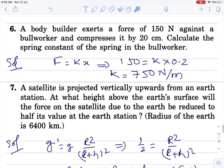Question number 6. Body builder exerts a force of 150 Newton against a bullworker and compresses it by 20 cm. Calculate the spring constant. So F equals kx, k is spring constant, x is change in length from natural length. Compressed 20, convert to SI unit, equals 750 SI unit.